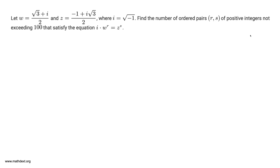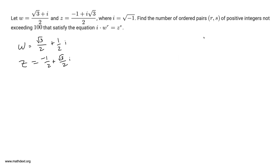So what we have here is w equals — let me write this slightly differently — root 3 over 2 plus 1 half times i. And z is equal to negative 1 over 2 plus root 3 over 2 times i. What I'm going to do is plot w and z on the complex plane.